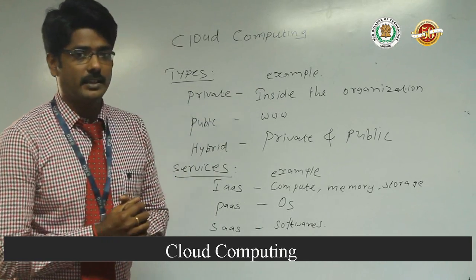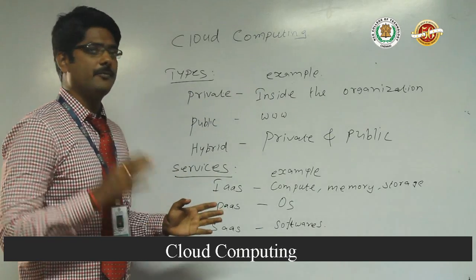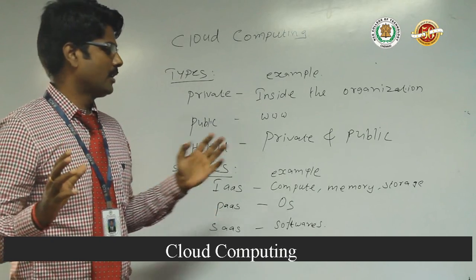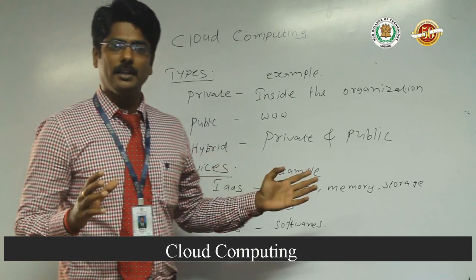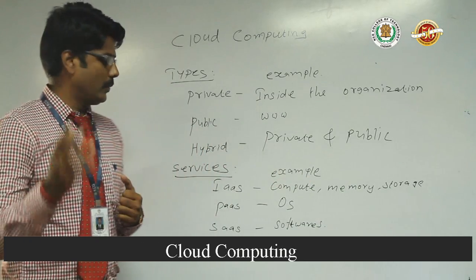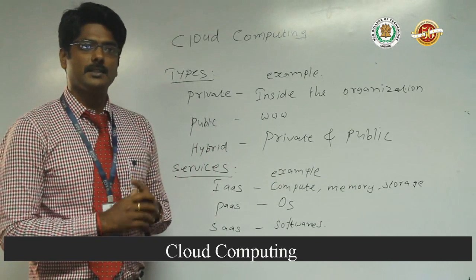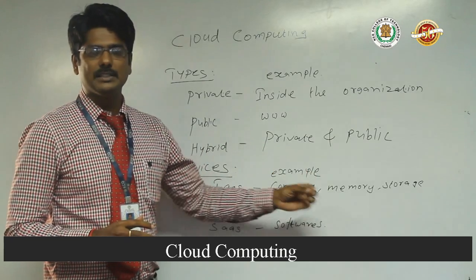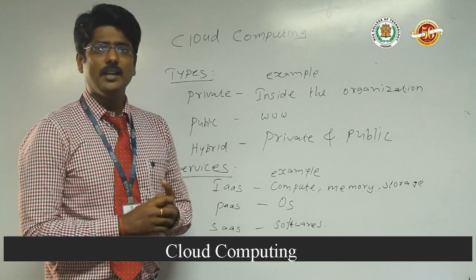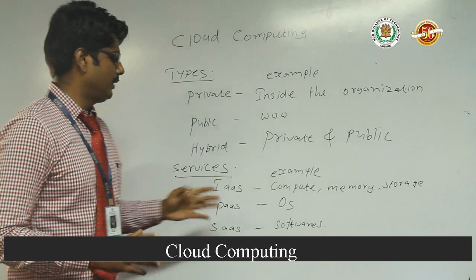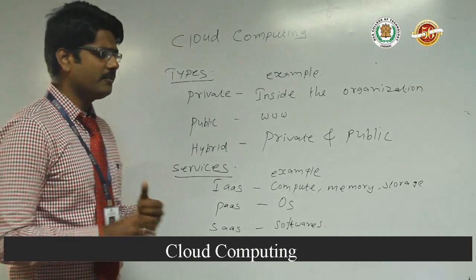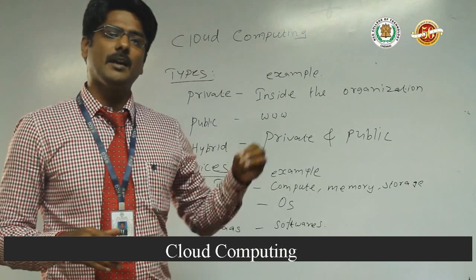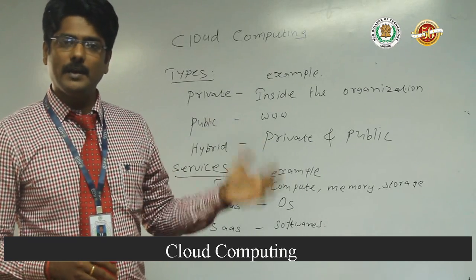Next, the different services in cloud computing. The first service is infrastructure as a service — the basic infrastructures are compute, memory, and storage. The second is platform as a service — whatever operating system you want to use, you can access it using the pay-per-use technique from the cloud servers. Finally, software as a service — all kinds of software will be available at any time, anywhere in the world, and can be used by any user even while they are traveling.